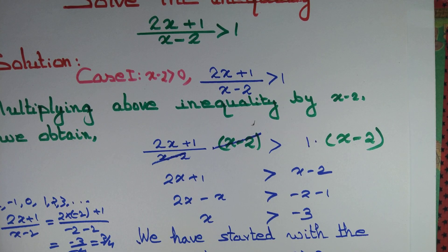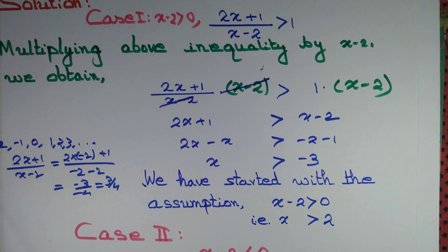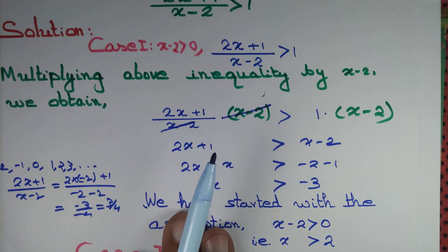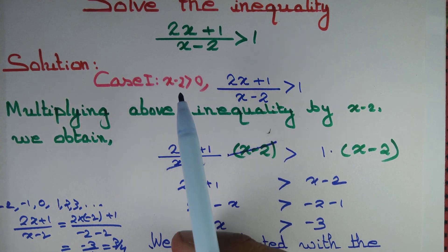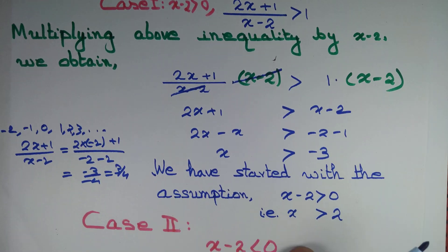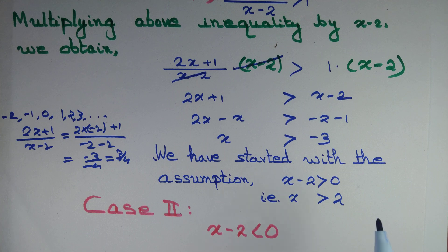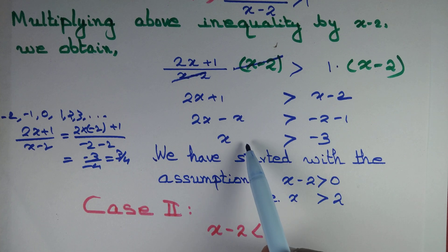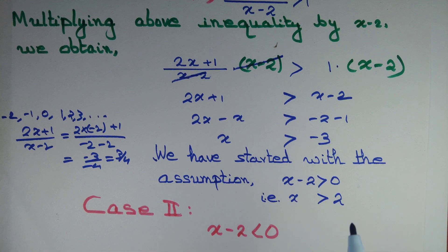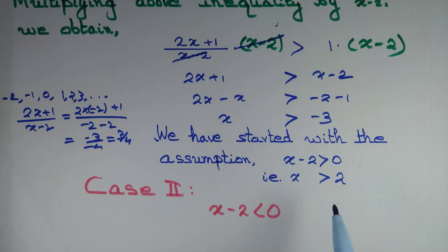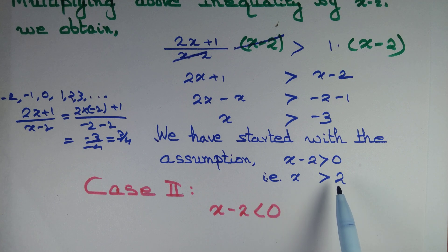So for Case 1, where x minus 2 is greater than 0, we got the condition x greater than minus 3. Combined with x greater than 2, we conclude that x has to be greater than 2.